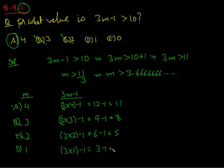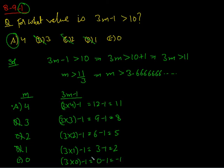Answer choice D is 1: 3 times 1 minus 1 equals 3 minus 1 equals 2 — not more than 10, so D is out. Answer choice E is 0: 3 times 0 minus 1 equals negative 1 — not the answer. So the answer is A. You can use either method, but the algebraic method is faster and better for the actual test.